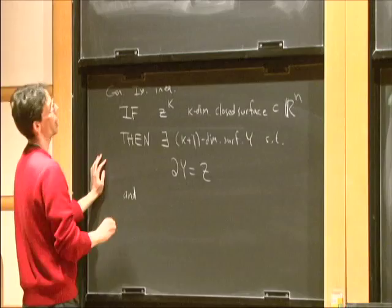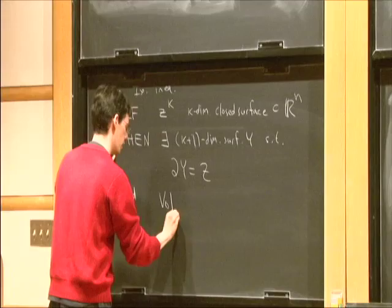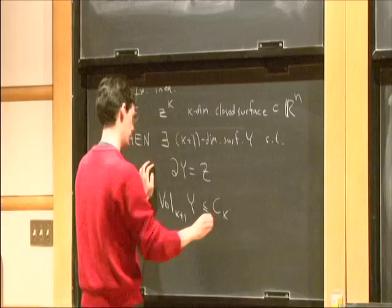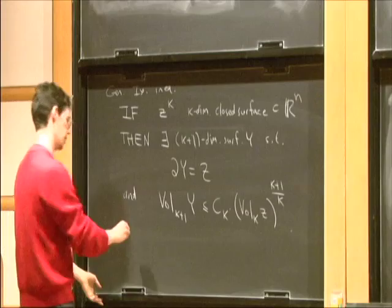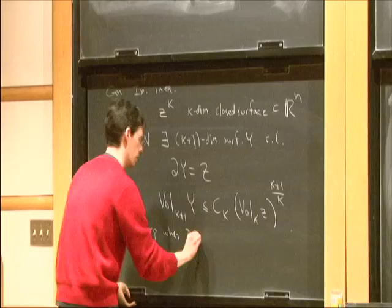And the volume of Y obeys an inequality which is very similar to that one. Namely, the k-plus-1 dimensional volume of Y is bounded by a constant Ck times the k-dimensional volume of Z raised to an appropriate power, k+1 over k.